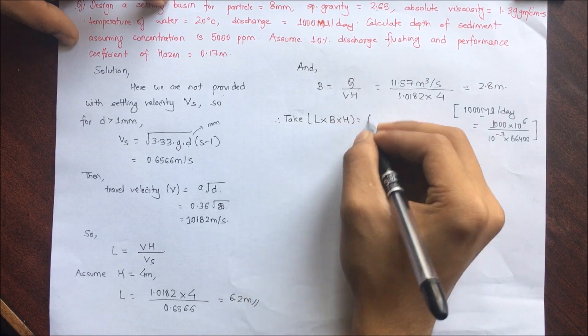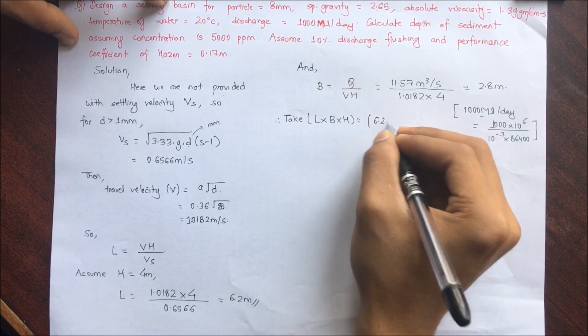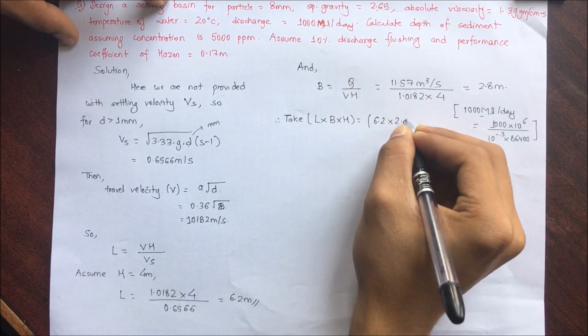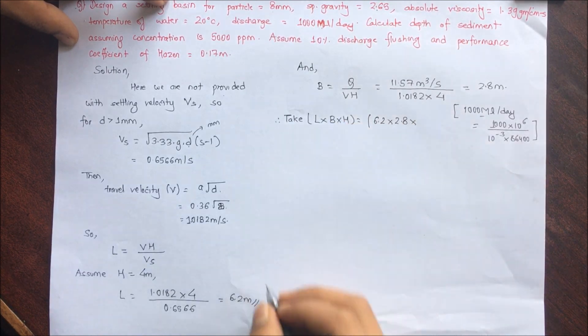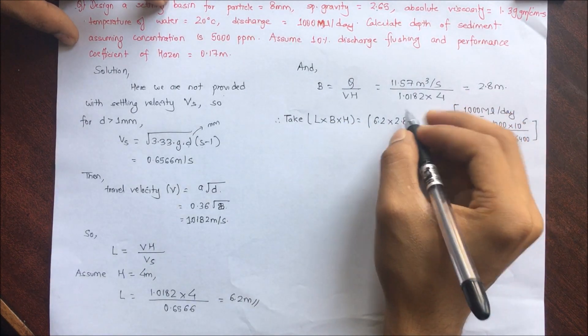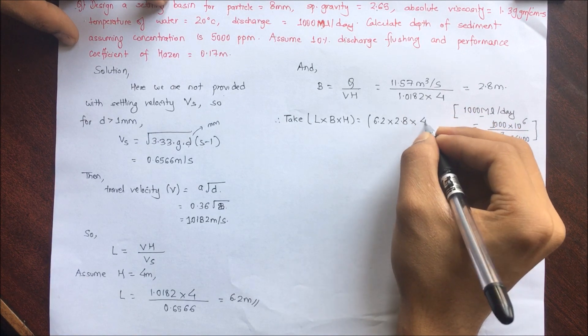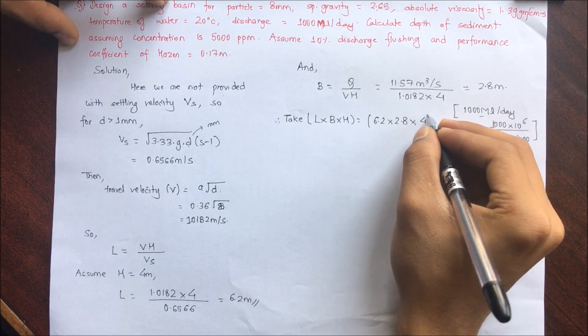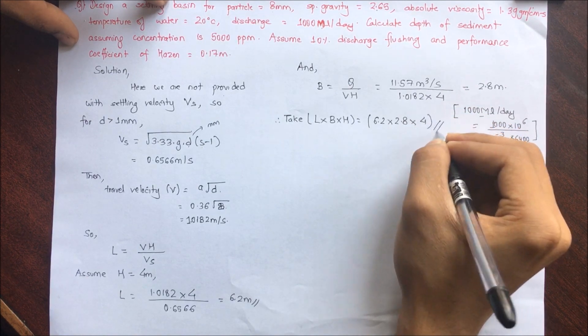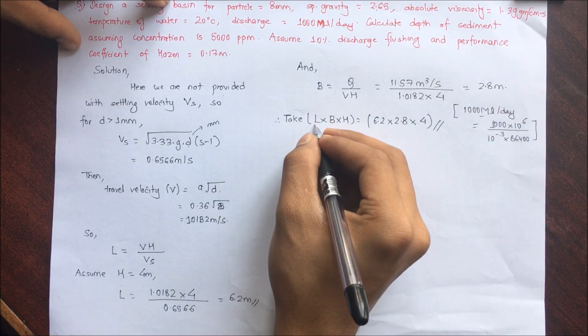The overall dimensions of the settling tank are: length 6.2 m × width 2.8 m × height 4 m (3 m can also be taken).